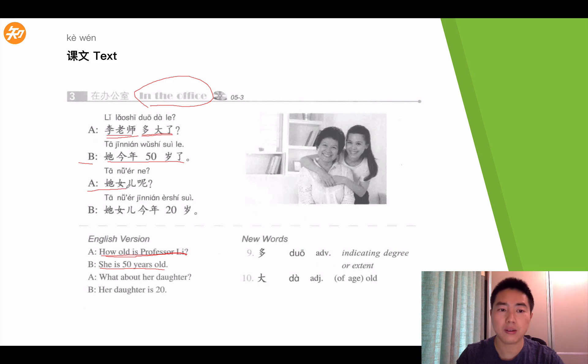Then A asked, 她女儿呢? How about her daughter? What about her daughter? Then, she answered, B answered, 她女儿今年二十岁。Her daughter is 20 years old this year. Okay, so let's take a look at these new words. The first one, 多, 多 is an adverb indicating a degree or extent. The second one, 大, 大 is an adjective which means of age, old.